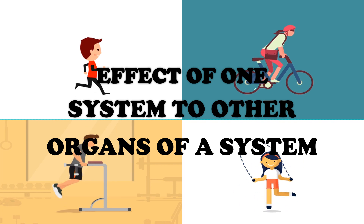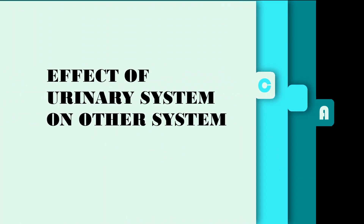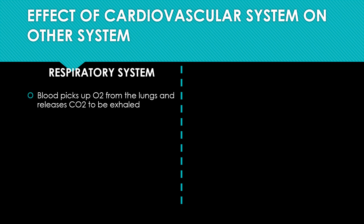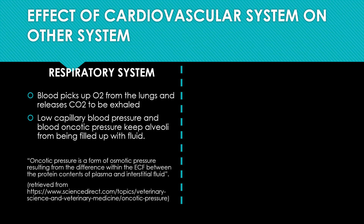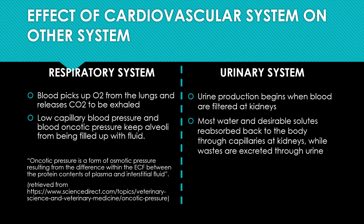Now we will discuss the effect of one system on other organs and systems. We will discuss how the cardiovascular system, respiratory system, and urinary system affect each other. The cardiovascular system affects the respiratory system: the blood picks up oxygen from the lungs and releases carbon dioxide to be exhaled through the respiratory system. Low capillary blood pressure and blood oncotic pressure keep the alveoli of the lungs from being filled with fluid; if both pressures are high, the probability of alveoli filling with fluid increases and gas exchange is affected. In the urinary system, urine production begins when blood is filtered at the kidneys. Most water and desirable solutes are reabsorbed back to the body through capillaries at the kidneys, while waste like urea, uric acid, and extra water are excreted through urine.